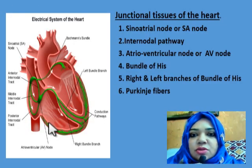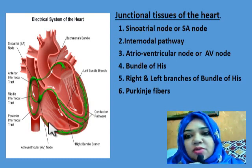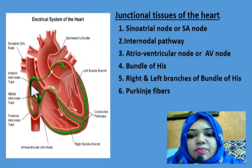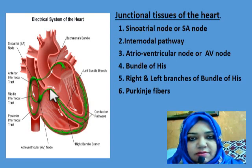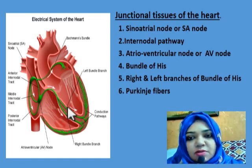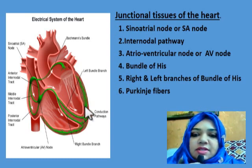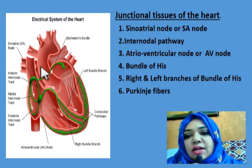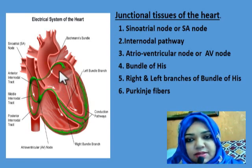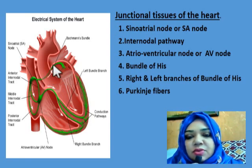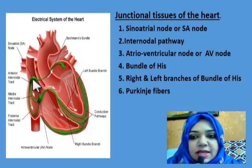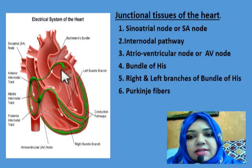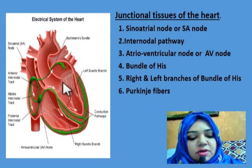Next, the junctional tissues of the heart: we have the SA node, the internodal pathways (anterior, intermediate, and posterior), the AV node, the bundle of His with its right and left branches, and the Purkinje fibers. In viva, you may be asked how the left atrium receives the impulse. A branch from the SA node goes to the left atrium — this is known as Bachmann's bundle, and it is important for viva.